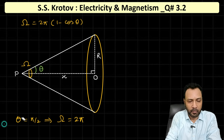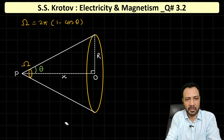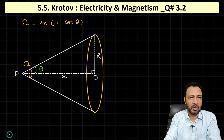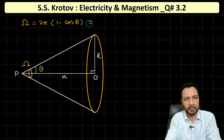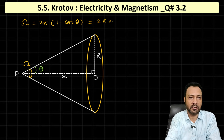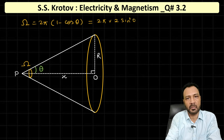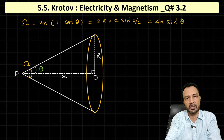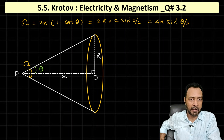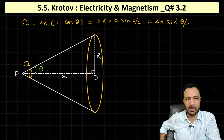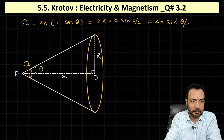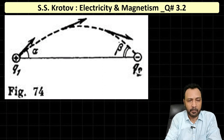The formula can be further simplified. Using the identity 1 − cos θ = 2 sin²(θ/2), we get: ω = 2π · 2 sin²(θ/2) = 4π sin²(θ/2). So the relationship between the solid angle omega and the half-angle theta of the cone is: ω = 4π sin²(θ/2).